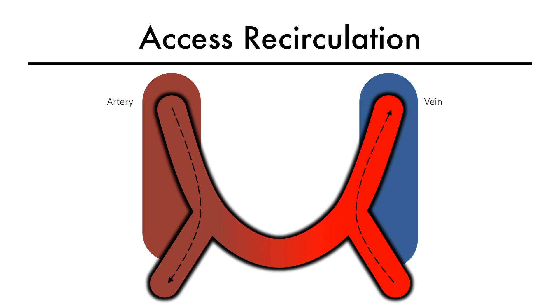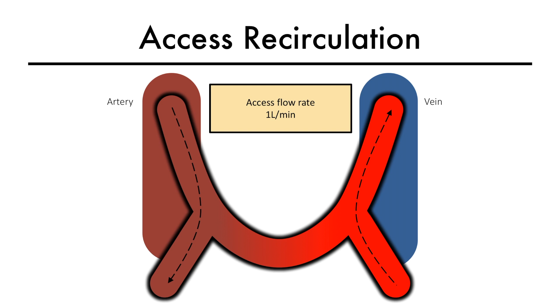Access recirculation occurs when the access blood flow, which normally averages 1 liter per minute, reduces to the range of 350 to 500 milliliters per minute due to access stenosis.